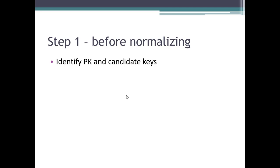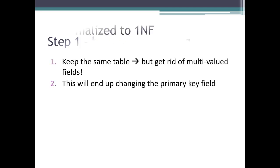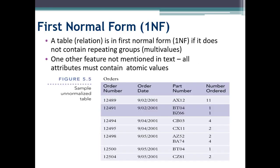The first thing you want to do before you start normalizing is identify your primary keys and any candidate keys. Remember that a candidate key is a key that could have been the primary key. So the first step is to go from unnormalized to one NF. So you've got your data in a table. You're going to keep the same table. Nothing changes there. But when it's unnormalized, you've got multivalued fields. We've already discussed the issues with multivalued fields. First normal form, which you see we will abbreviate as 1NF. A table is in first normal form if it doesn't have any repeating groups or multivalues.